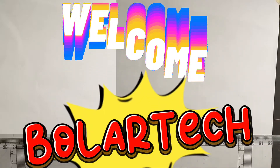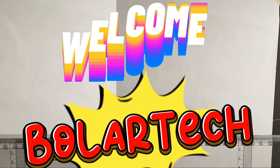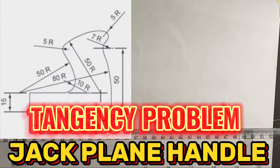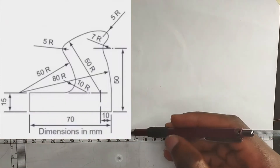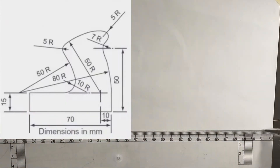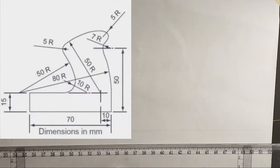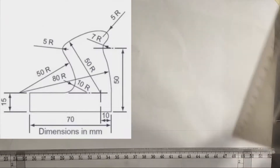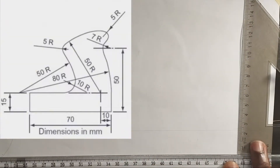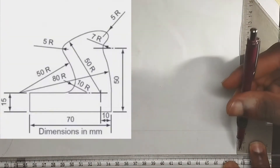In this video, we are going to be solving the tangency problem on the screen, which is a jack plane handle. First of all, I'm going to draw my straight horizontal line like this. Then pick my set square and draw a vertical line in this manner.